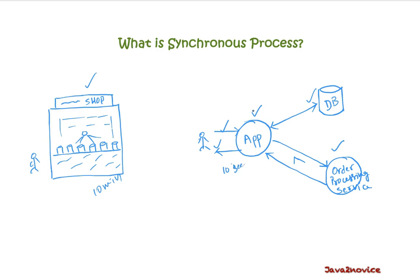This is taking a total of 10 seconds to process your request. Now there are thousands of such requests coming at the same time to your application. Every request will take 10 seconds to process. This creates too much workload on your application server, which will degrade your application performance. How can we improve this situation?